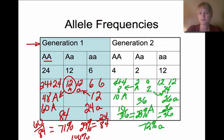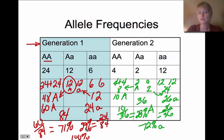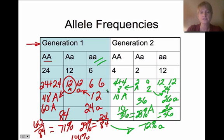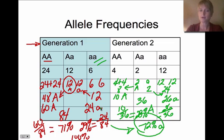Adding 28% and 72% gives 100%, confirming the math. Comparing generations: the dominant allele went from 71% to 28%, and the recessive allele went from 29% to 72%. This definite change tells us the recessive allele was conferring some type of advantage and became very common. This change in allele frequencies is how we know evolution occurred in that population.